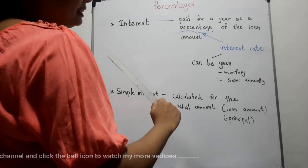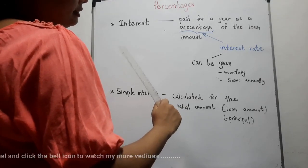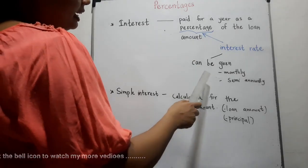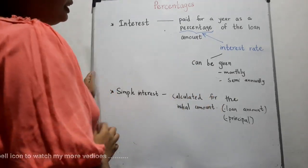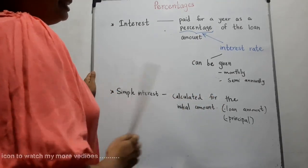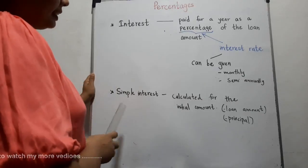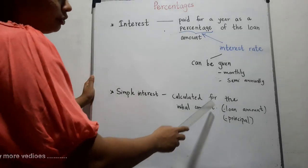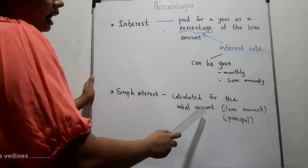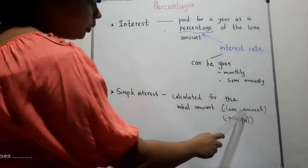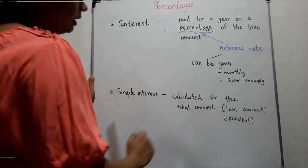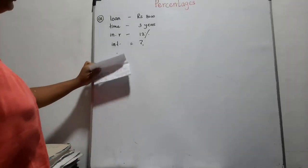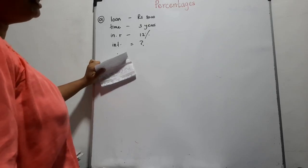Normally, this interest rate is calculated annually, but it can also be given monthly or semi-annually. In this lesson, we are going to discuss simple interest. Simple interest is calculated on the initial amount. Other names for the initial amount are loan amount or principal. I am going to discuss 5 questions for you to understand the simple interest rate.